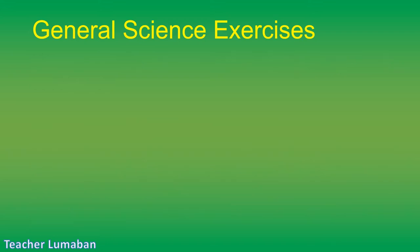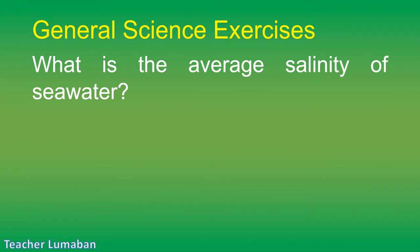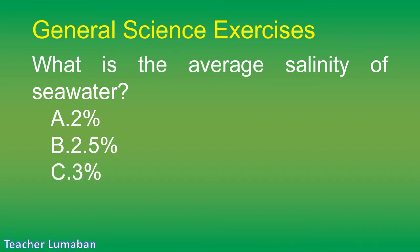What is the average salinity of sea water? Letter A: 2 percent. Letter B: 2.5 percent. Letter C: 3 percent. Letter D: 3.5 percent.